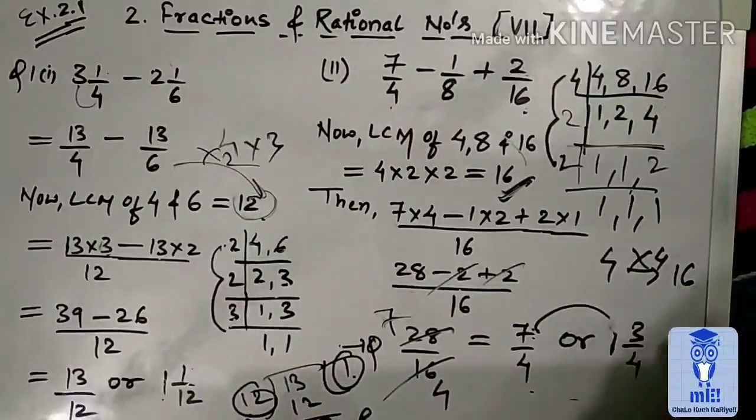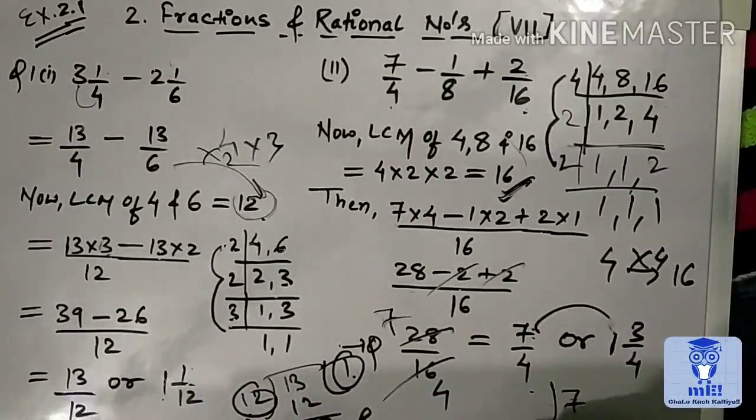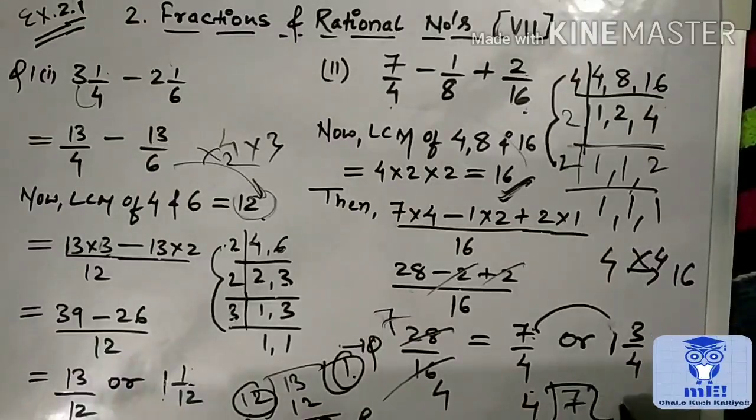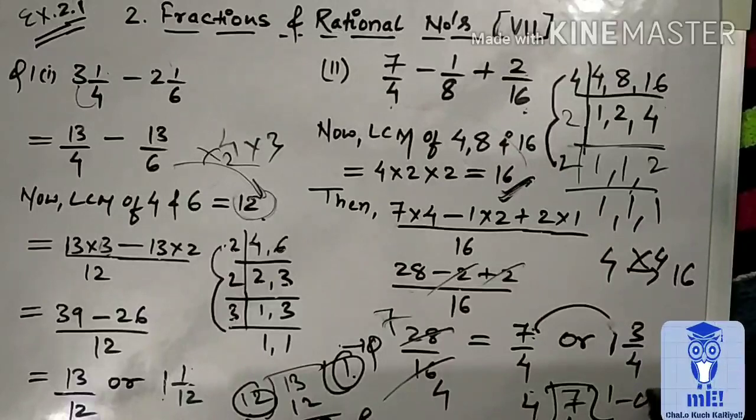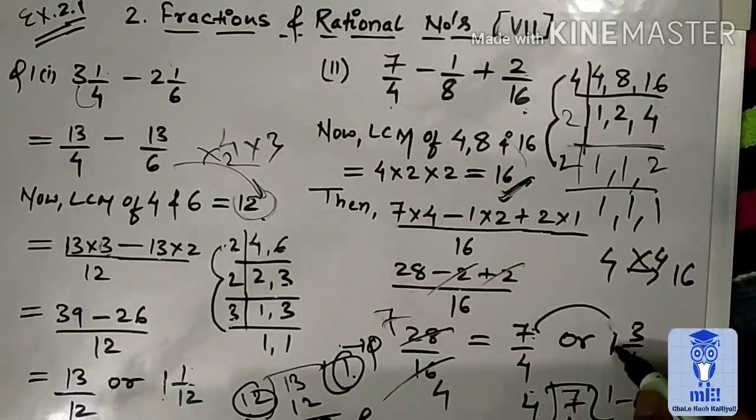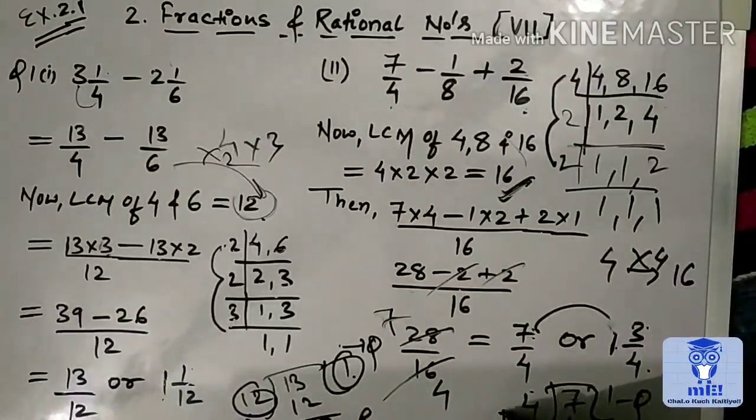Or, we can convert this into mixed fraction. 1, 3 by 4. Here it is. 7 divided by 4. 4, 1, 4. Remainder, 3. So, first we write quotient. Then remainder. Quotient, remainder. And then this divisor.